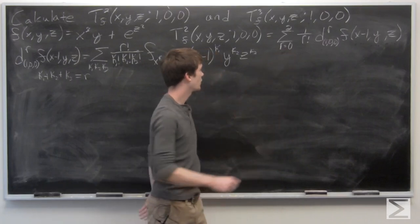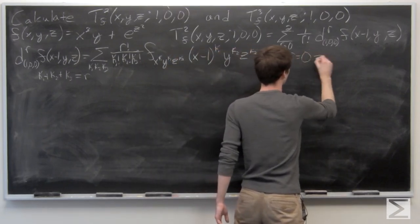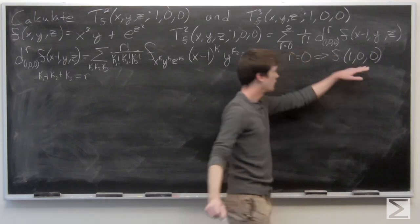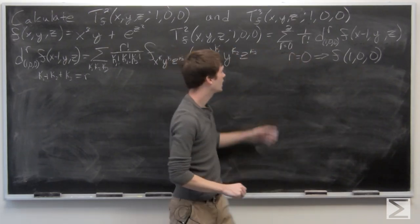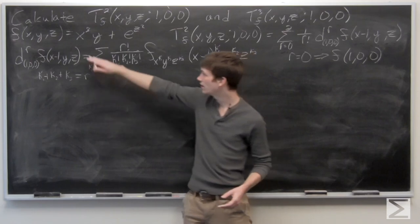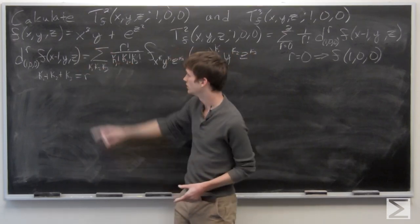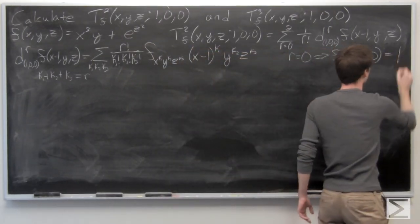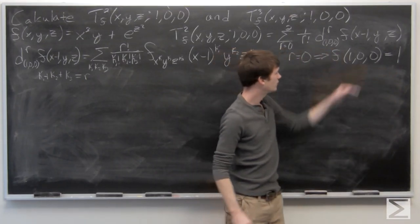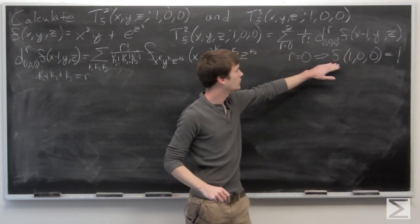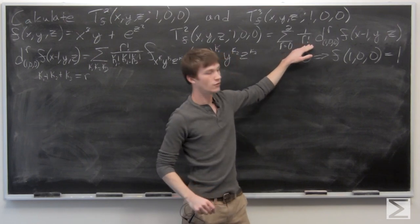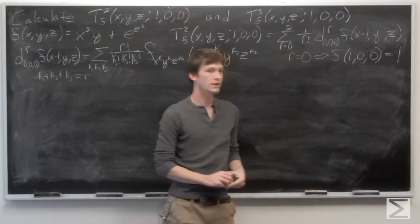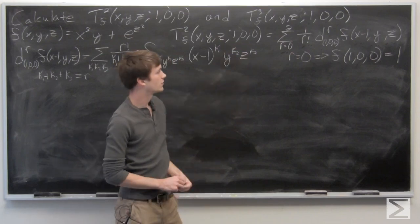We know that r equals 0 is a special case — it's just the value of f at the point (1, 0, 0), which equals 0 plus e to the 0, which is 1. So our first term in the Taylor polynomial is just 1, since 1 over 0 factorial times 1 equals 1.